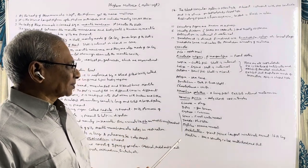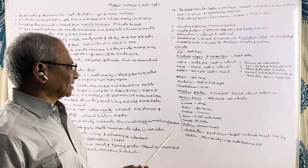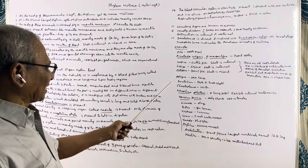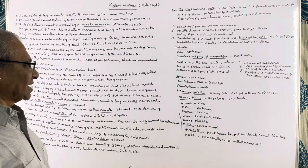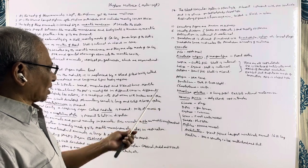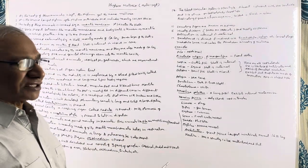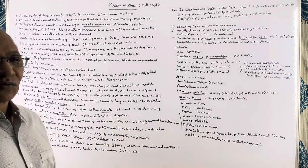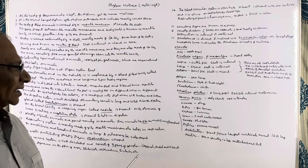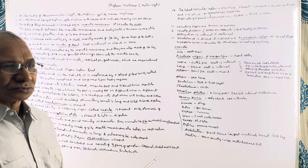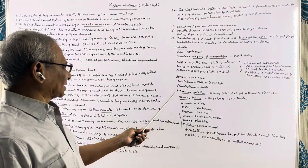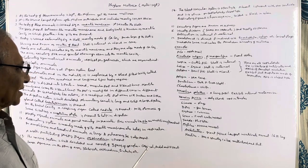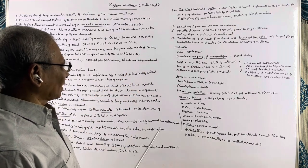Cephalopods also exhibit jet propulsion by using their oral arms and siphon. Aplysia is known as sea hare. Dentalium is called tooth shell or tusk shell, as it resembles the tusk of an elephant. Chiton is known as Chiton, and in this animal the shell is in eight pieces on the dorsal surface. Neopilina galatheae is a living fossil found deep in sea waters and exhibits internal metamerism. Scientists believe Neopilina galatheae is a very ancient animal, and because it exhibits annelid characters, annelids are considered the ancestors of mollusks. The presence of trochophore larvae in both phyla supports this.